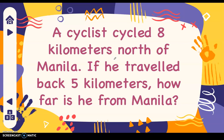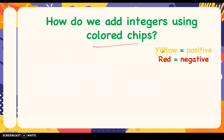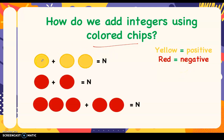Let's have another example. This time, we answer this using colored chips. A cyclist cycled eight kilometers north of Manila. When you say north, going up — that's above zero on the number line, so it's positive. If he traveled back five kilometers south, how far is he from Manila? Yellow represents positive and red represents negative numbers.